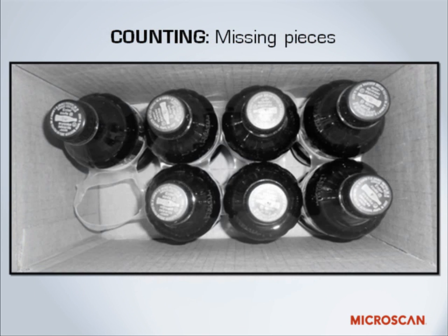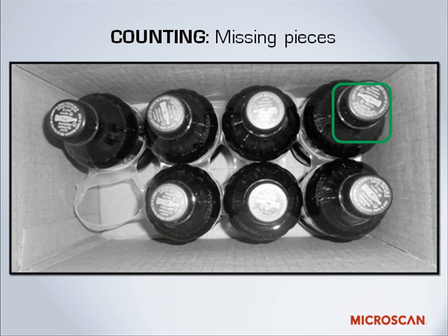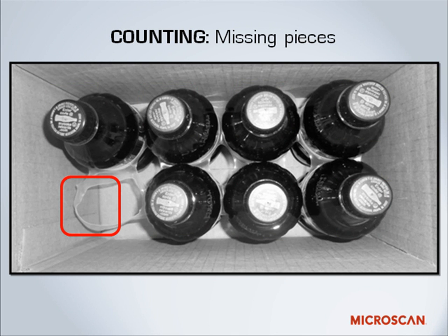Another counting function is absence/presence — is it there or not? Here we have an eight-pack of sodas, and you can see that one of the sodas is missing. With machine vision, that packaging can be checked to make sure an incomplete pack doesn't make it to the grocery store shelf. We've slowed the process down so you can see it, but machine vision systems can operate much faster.